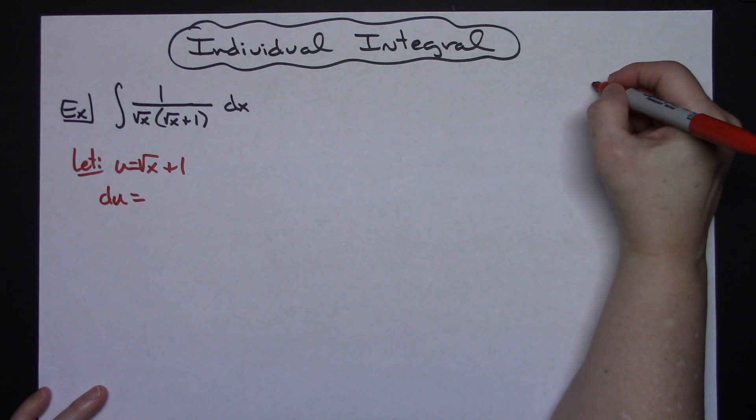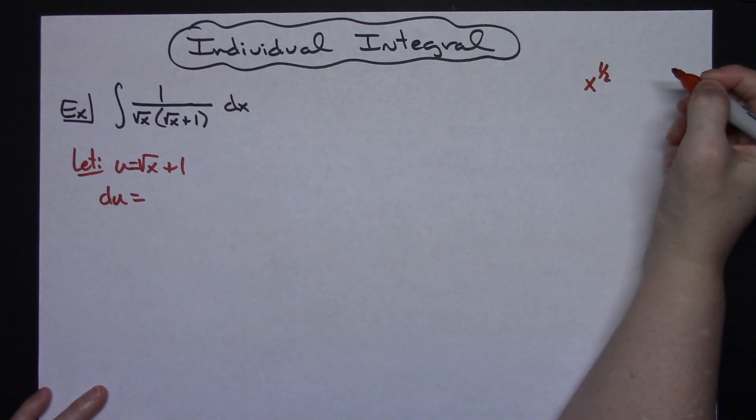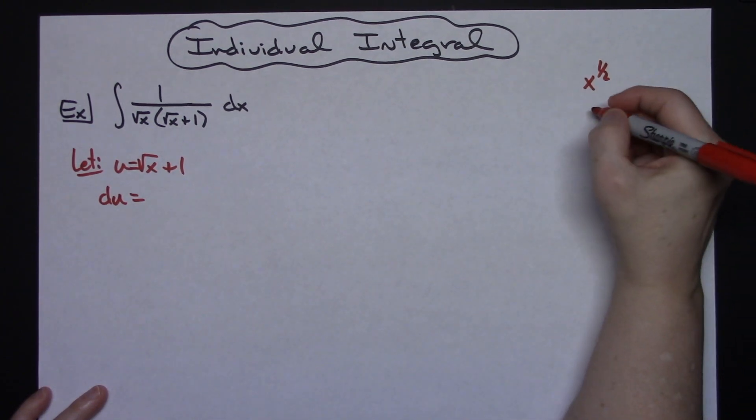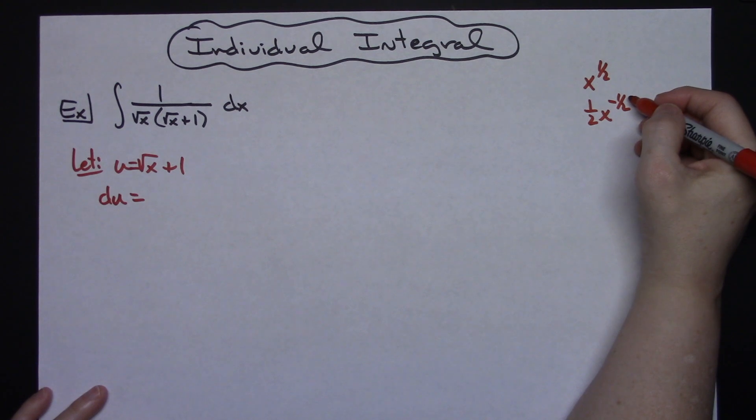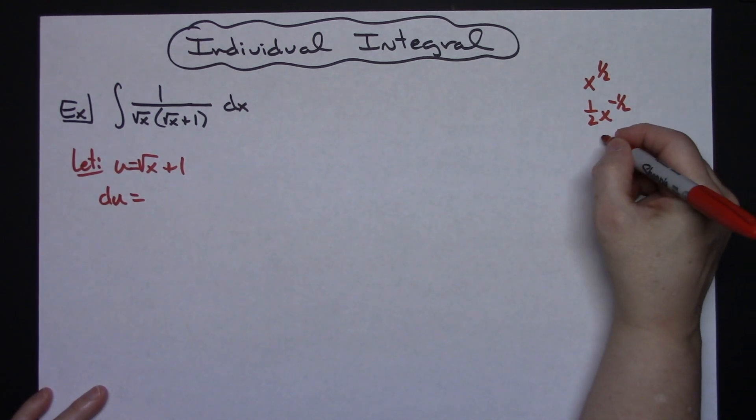I can take the square root of x and rewrite it as x to the 1 half power. When I take the derivative, pull it down in front, I'm going to have a 1 half x to the minus 1 half, and then I can move this back down to the bottom and make it a square root. So 1 over 2 square root of x.